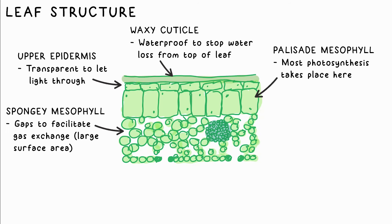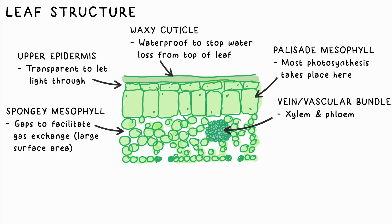The palisade mesophyll is where the majority of photosynthesis takes place. Under that is the spongy mesophyll layer, which has lots of gaps around the cells to increase the surface area through which gas exchange can occur. Carbon dioxide diffuses into the cells, while oxygen and water diffuse out. We also have the vascular bundle, which includes the xylem and phloem.